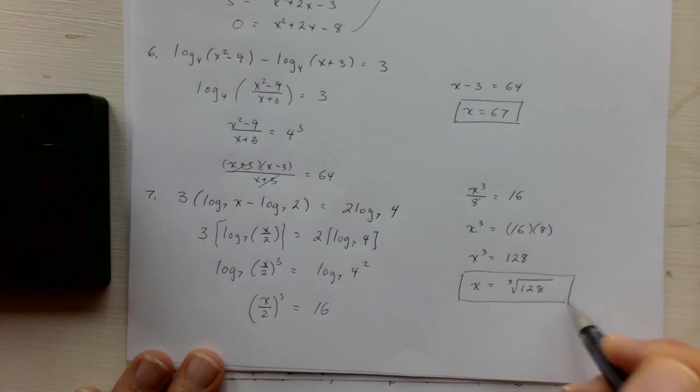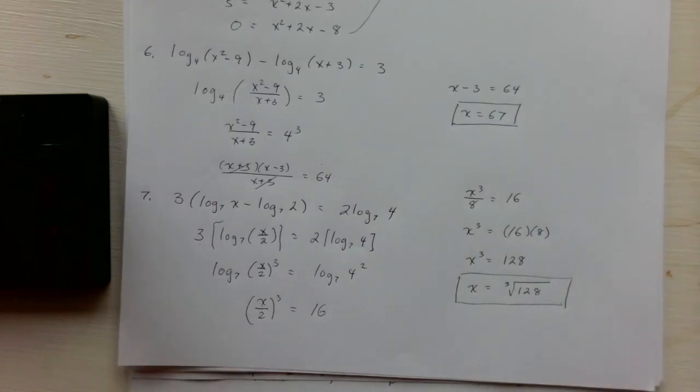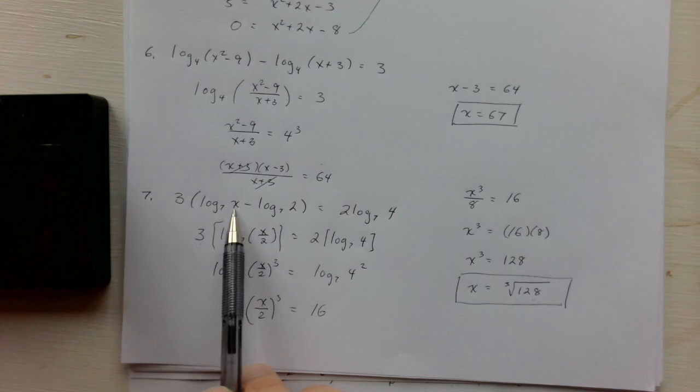Don't think that's a... 128 is not a nice cube. It's 2 to the 7th. So we just leave our answer like this. And we check. But this is a positive number, so we can see that the log base 7 of that is certainly defined. So everything works out.